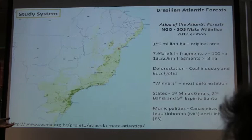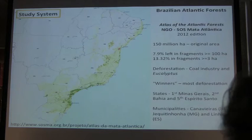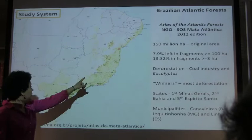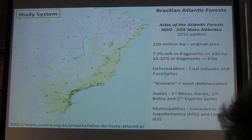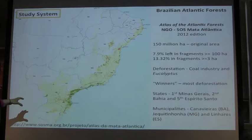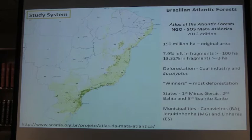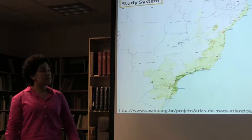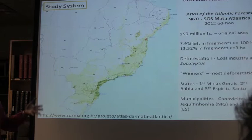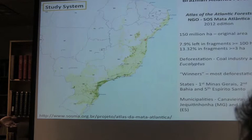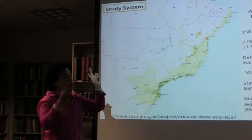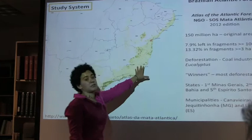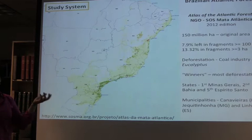If you consider smaller fragments of three hectares and larger, we have about 13%. It's not evenly distributed — most is in southeastern Brazil. Deforestation started when colonized by Europeans, and most major Brazilian cities are in the original Atlantic forest extent. This map is made every couple of years by SOS Mata Atlântica. In the last two or three years, most deforestation occurred because of the coal industry and eucalyptus plantation. The states with most deforestation are Minas Gerais, Bahia, and Espírito Santo — areas that are phylogeographically important.